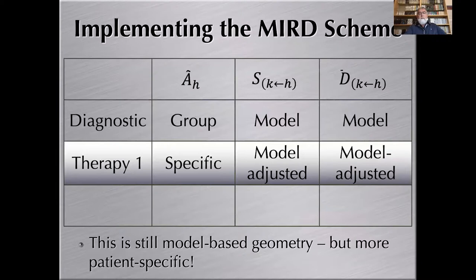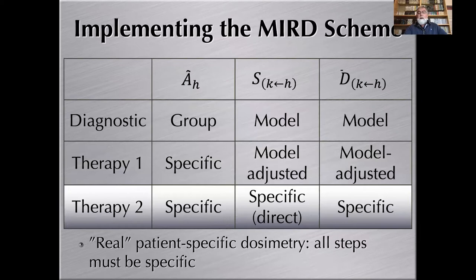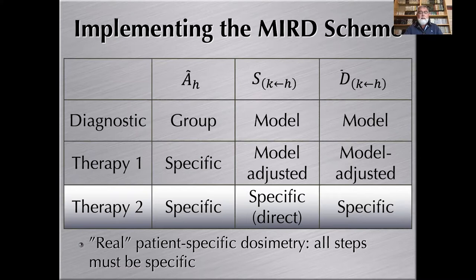By doing so, you have specific activity quantification and model-adjusted S-value determination. So you still have model-based dosimetry, but it's model-adjusted — something more realistic, very close to patient-specific dosimetry, but not yet fully patient-specific. In fact, the only way to implement fully patient-specific dosimetry is to do every step in a specific way: quantitative imaging, but also specific absorbed dose calculation in which you may not even compute the S-value. If you use it only for one patient, you compute straight the absorbed dose to that patient — and that is what patient-specific dosimetry is.